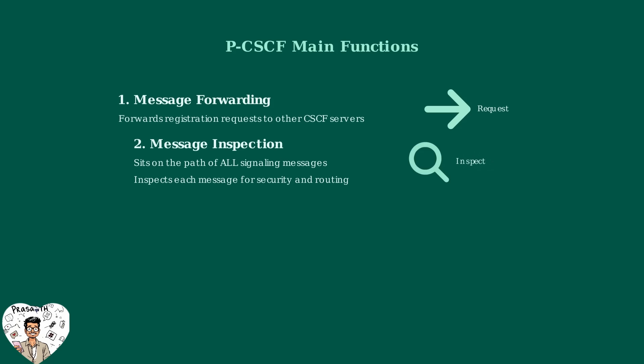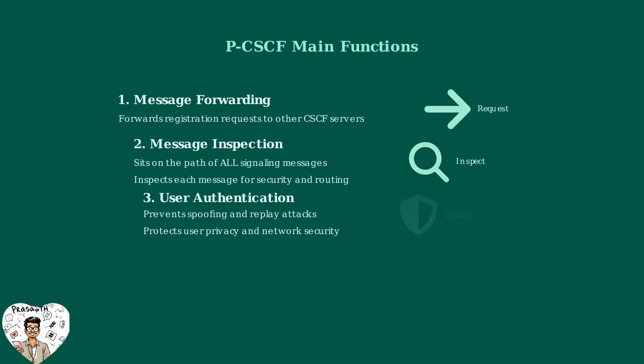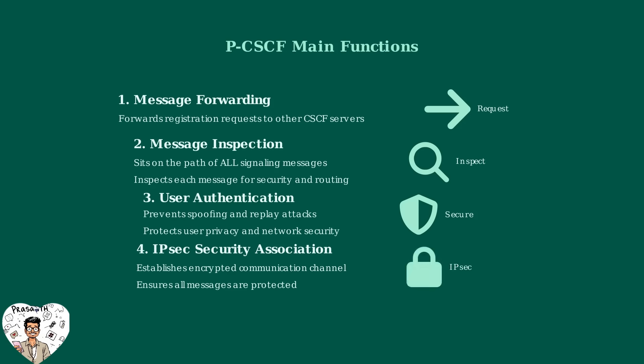Second, the PCSCF inspects every single signaling message that passes through it. It sits directly on the communication path, examining each message for security and proper routing. Third, it handles user authentication to prevent malicious attacks like spoofing and replay attacks — this protects both your privacy and the network's security. Finally, it establishes an IPsec security association with your device, creating an encrypted communication channel that ensures all messages between your device and the network are protected.